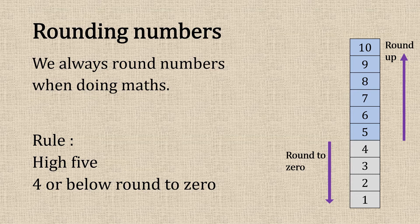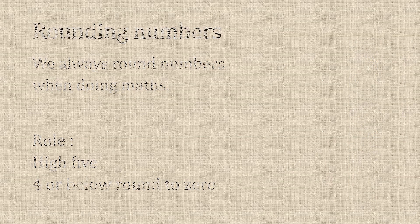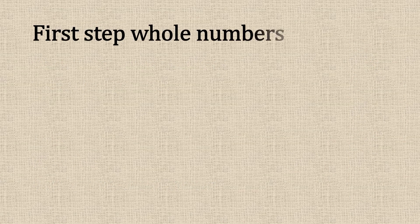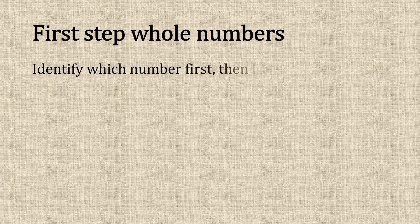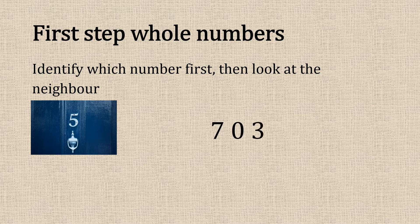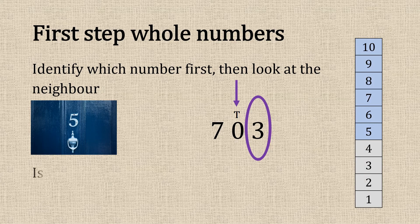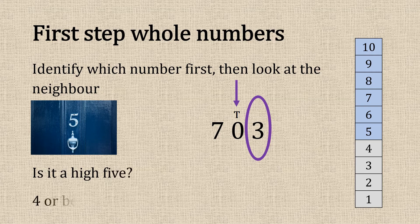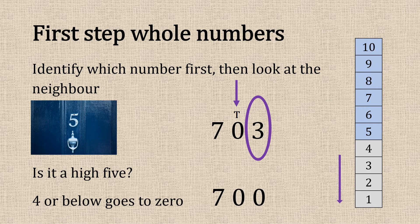This is the rule we have for whole numbers. First step: identify which number first, then look at the neighbor. Here in our tens column we've got a zero, and the neighbor is three. Is it higher than a five? No, it's four or below, so it goes to zero.